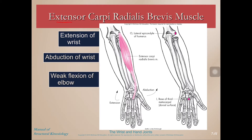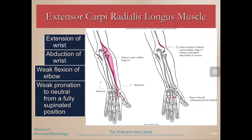Extensor carpi radialis brevis is an extensor of the wrist on the radial aspect, and it's a little shorter. Crossing that radial side, it does wrist extension, abduction, and weak elbow flexion. Extensor carpi radialis longus extends the wrist on the radial side and is a bit longer — notice it has a higher, more proximal origin than brevis. It also extends the wrist, abducts the wrist, provides weak flexion of the elbow, and weak pronation to neutral if you're fully supinated, similar to brachioradialis.